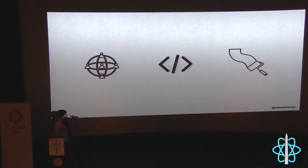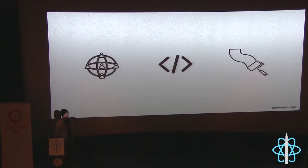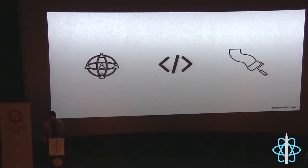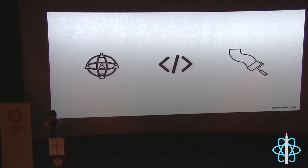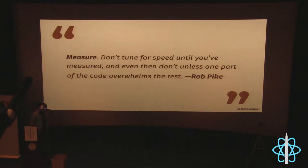There are three kinds of performance: network performance — getting the application from a CDN or data center to the browser; parse performance — when V8, SpiderMonkey, or JavaScriptCore parses your code and builds the page; and paint performance — actually rendering it to the page. The application you work on will have different needs, which is why there's no silver bullet — if there was, it'd be in the framework.